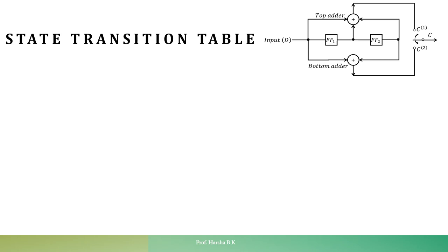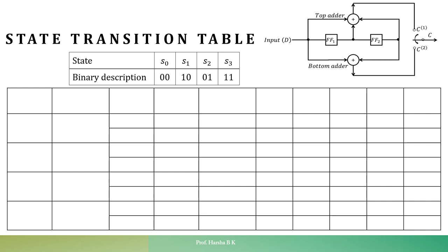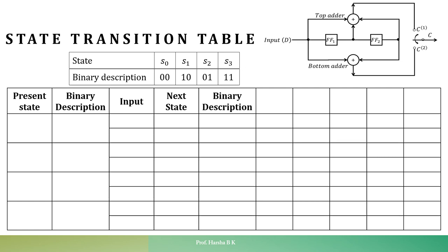Now let us write the state transition table for the given encoding circuit. The table includes: present state and its binary description, present input, next state and its binary description, DL (present input), DL-1 (content of FF1, the one-delayed version), DL-2 (content of FF2, the two-delayed version), and the outputs C1 from the top adder and C2 from the bottom adder.